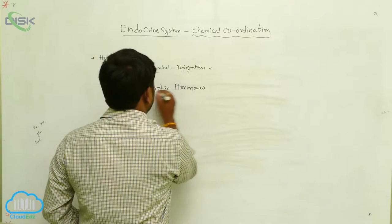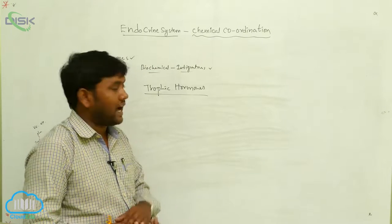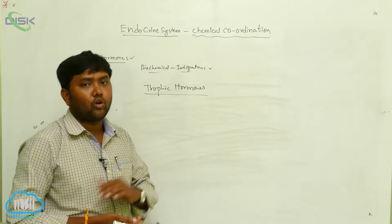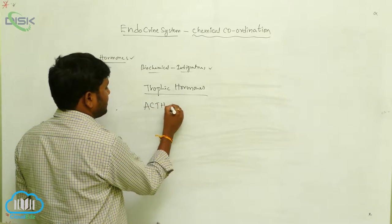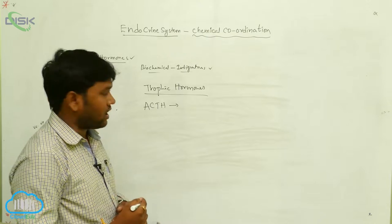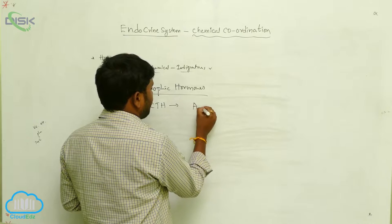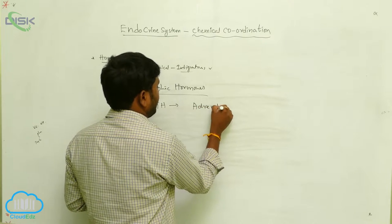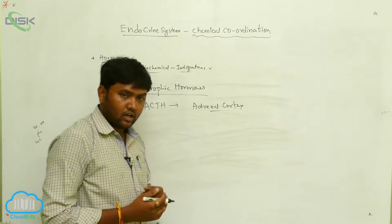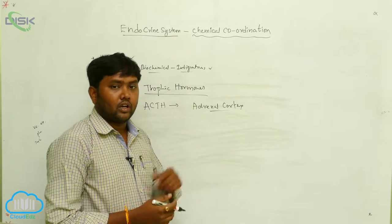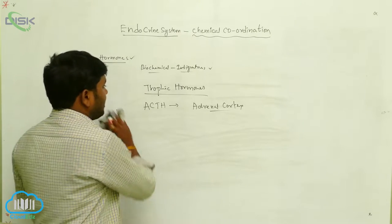When one hormone is secreted by stimulation of another hormone, it is called a Tropic Hormone. For example, ACTH — adrenocorticotrophic hormone — is secreted by the adrenal cortex, and the adrenal cortex secretions are stimulated by the pituitary gland. So these are the Tropic Hormones.